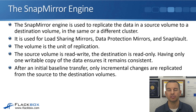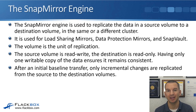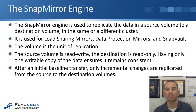With SnapMirror, the source volume is read-write and the destination is always read-only. We need to have just one writable copy of the data in order to keep the data consistent. If you replicated it to another location and you were able to write to both different locations at the same time, then they would be different. So to have that just one single master copy of the data, that's going to be at the source side, which is read-write. The destination is read-only.